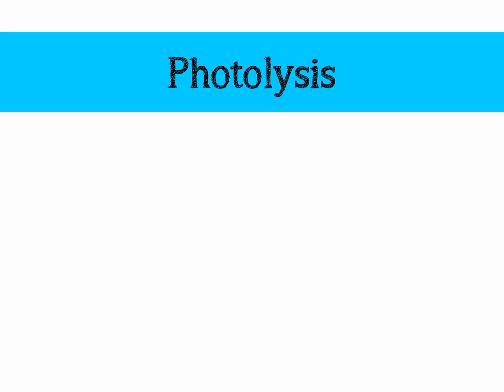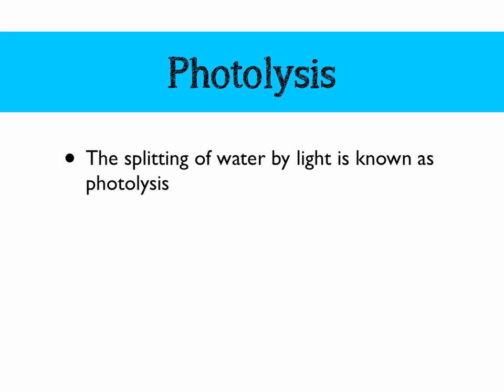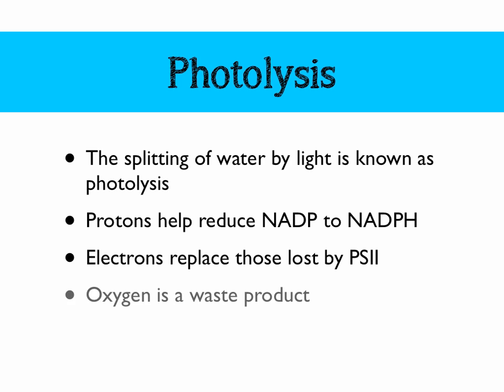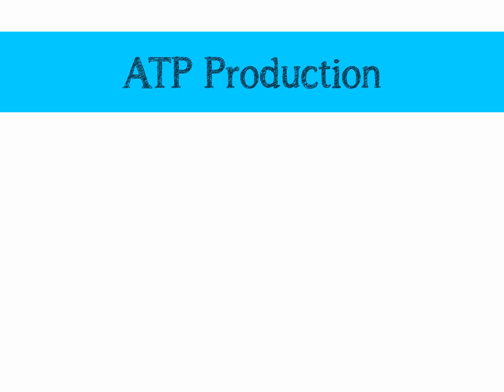Let's have a look at more detail on photolysis. This is the splitting of water by light. The protons from this help reduce NADP — that coenzyme — to its reduced form, NADPH, which is essential for the next part of photosynthesis. Electrons yielded from the splitting of water replace those already lost by photosystem 2. Oxygen is a waste product and can be used in cellular respiration.